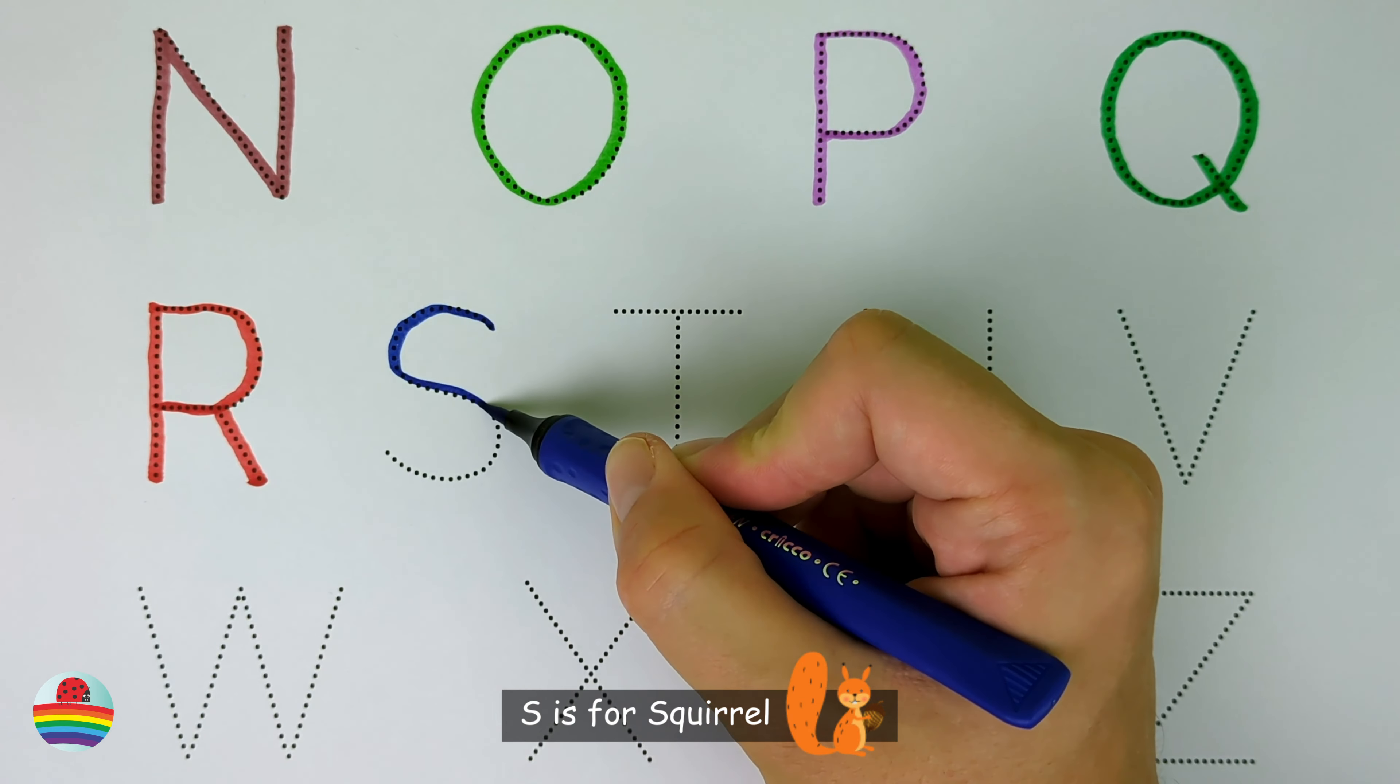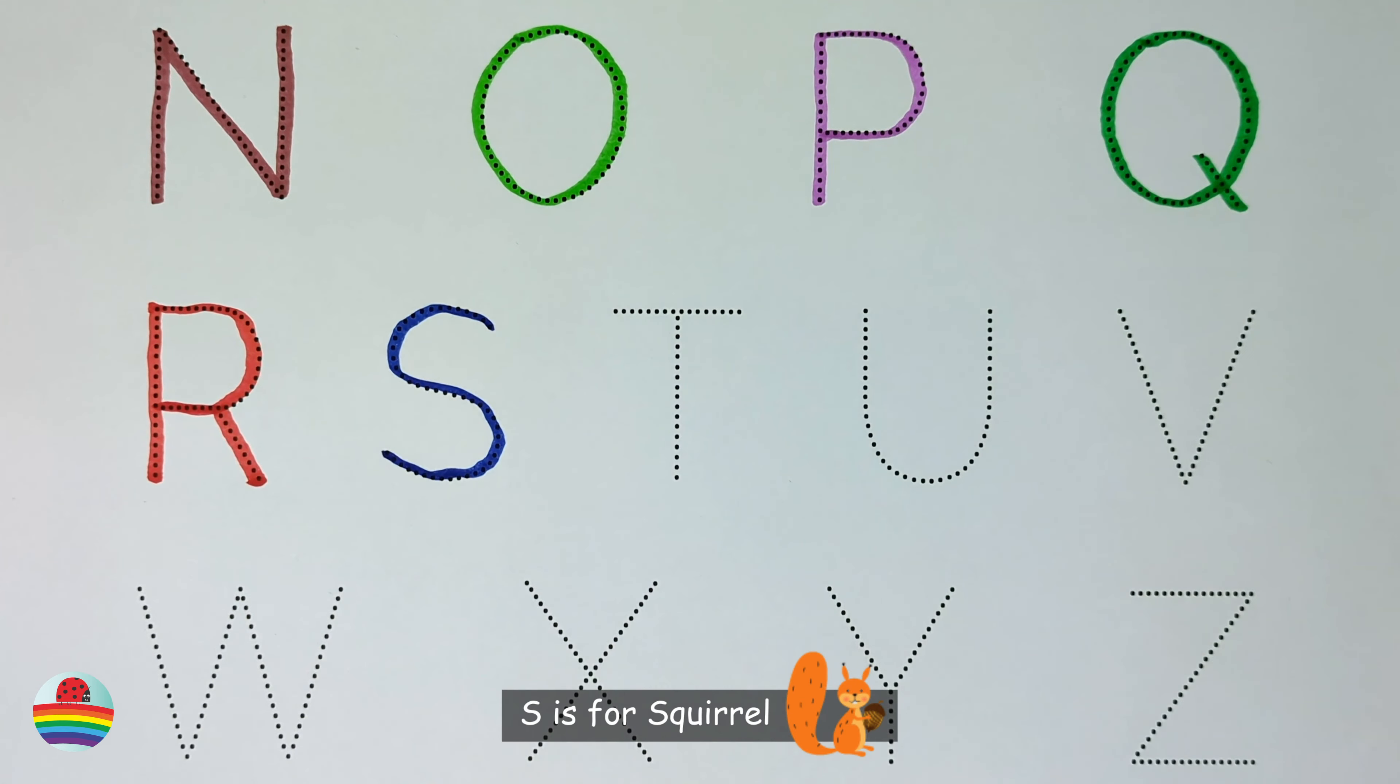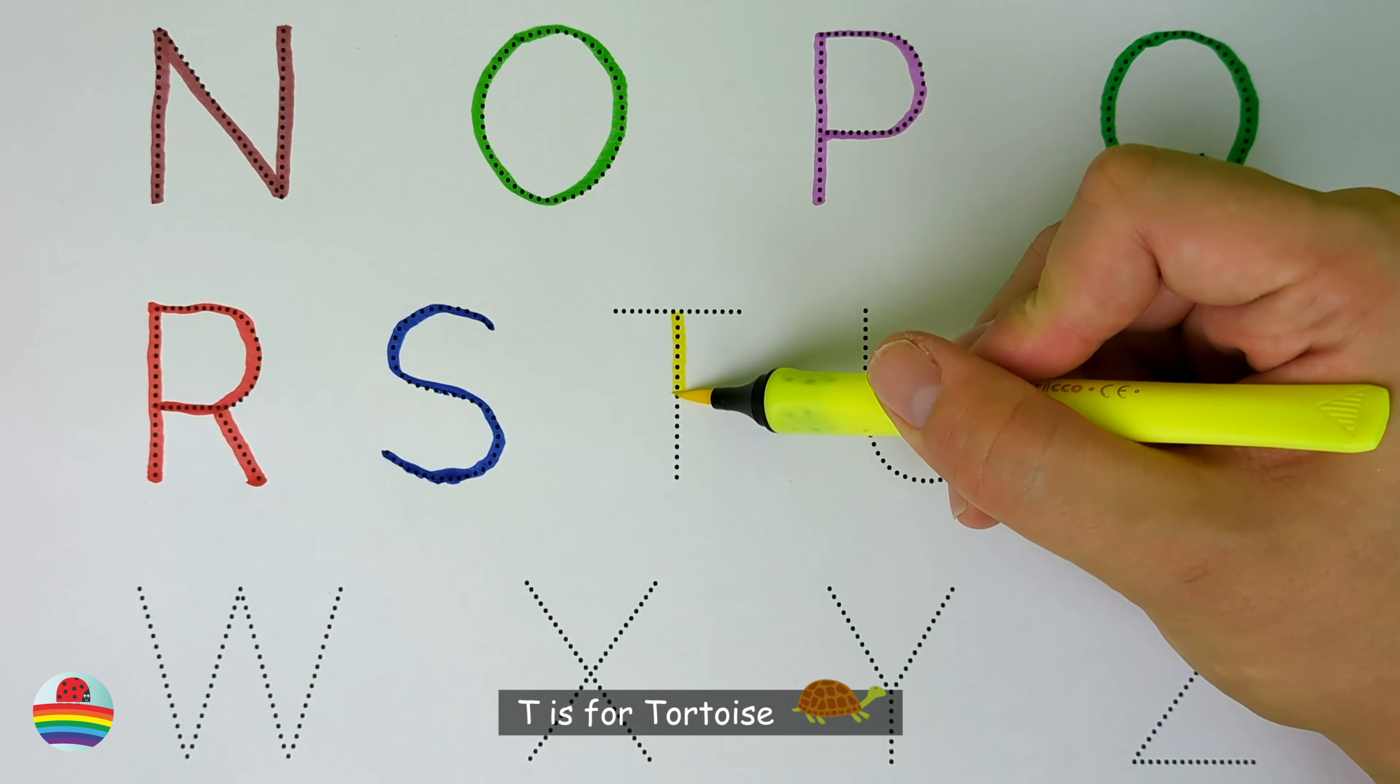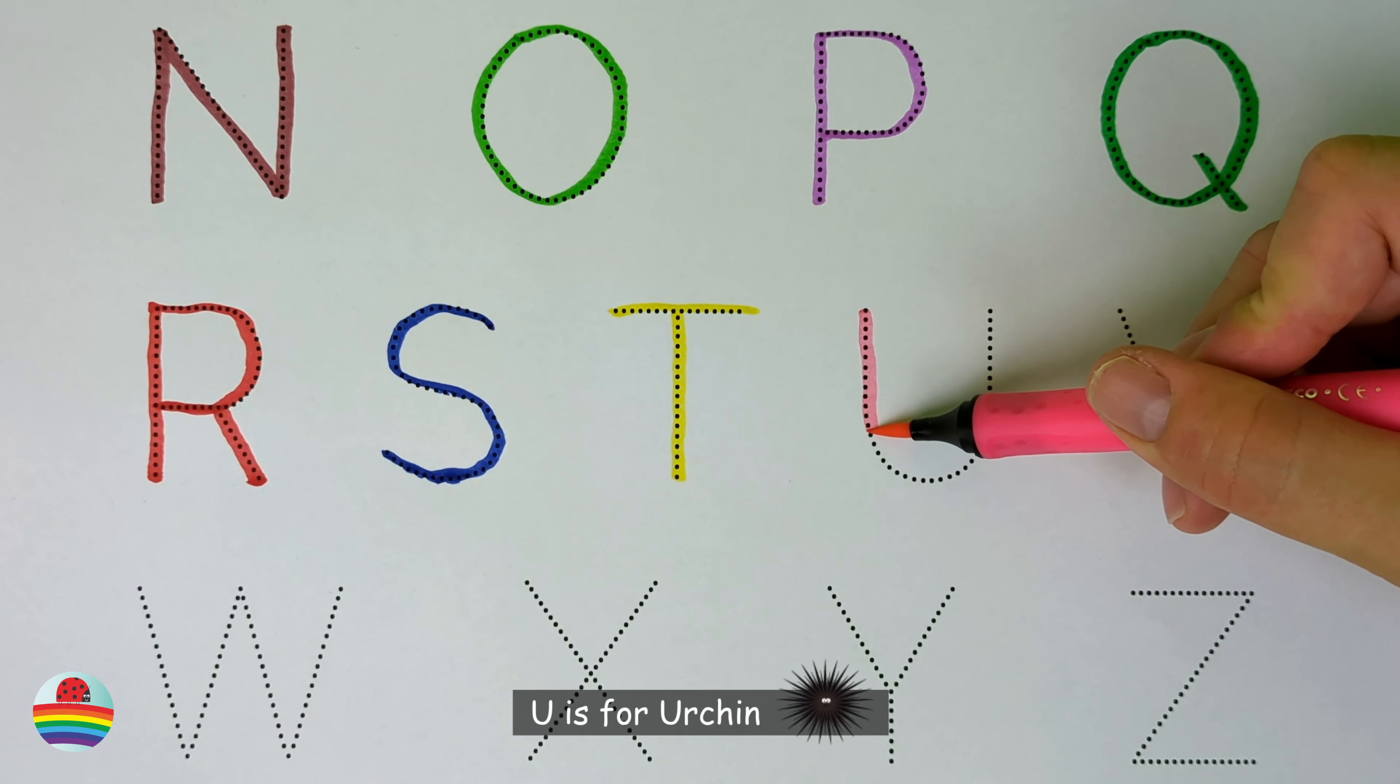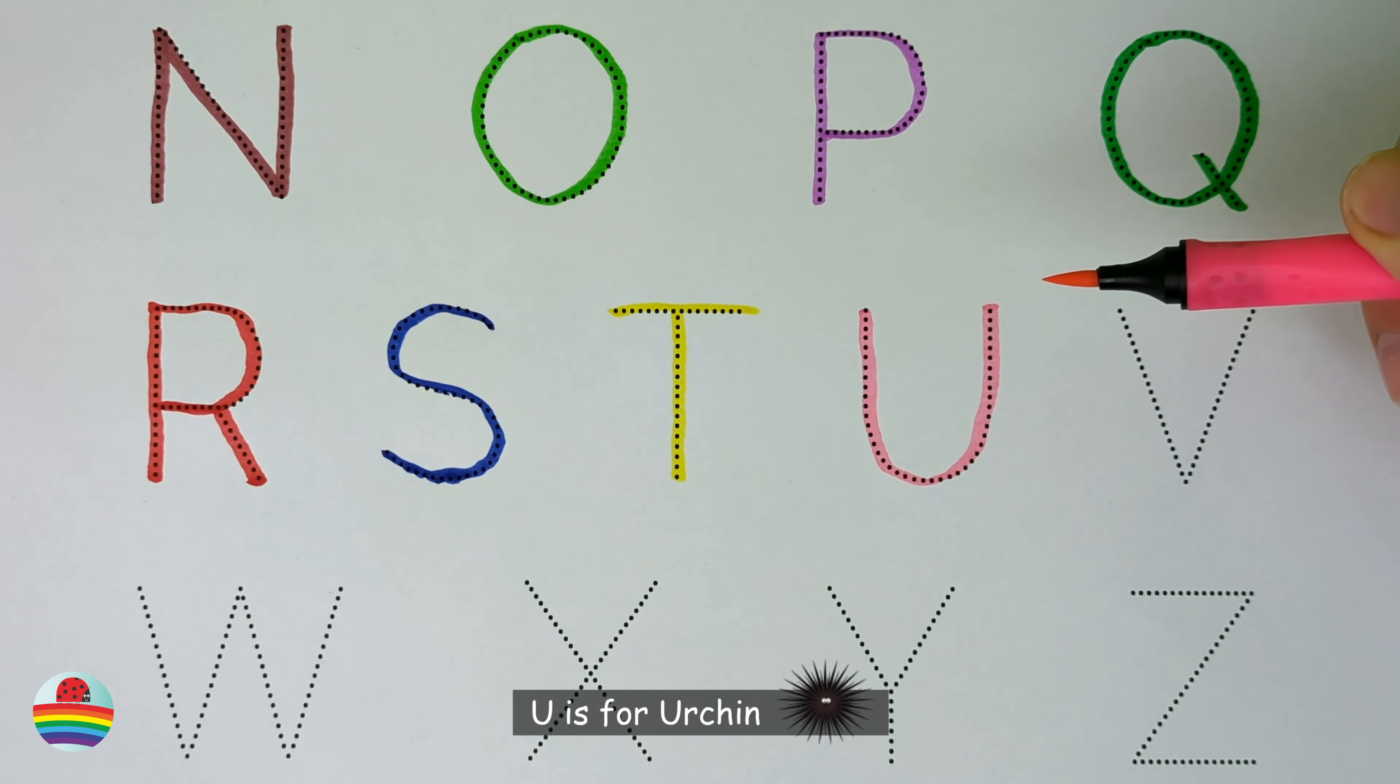S. S is for squirrel. S. T. T is for tortoise. T. U. U is for urchin. U.